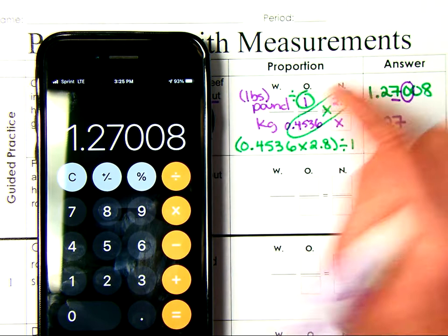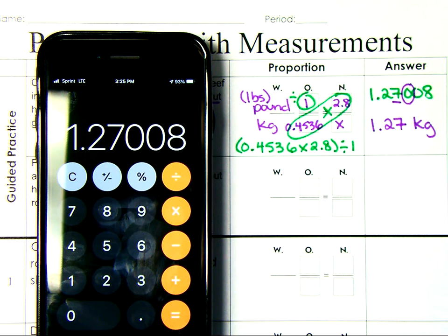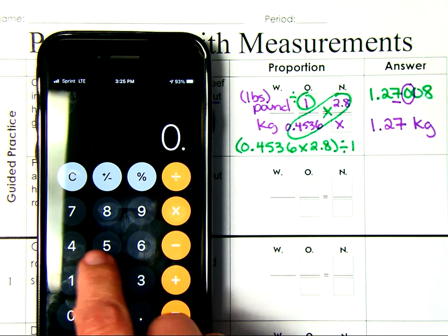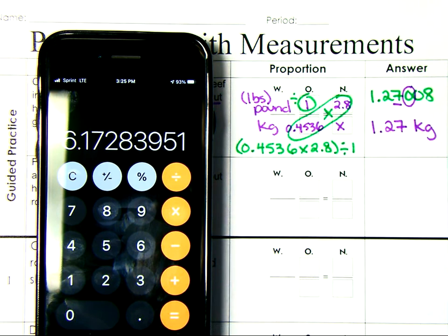If this were multiple choice, there might be a trick answer of 1.27 pounds. So that's why we want to make sure that we have our labels. The other trick answer, if you accidentally put 2.8 right here and did 2.8 times 1 and then divided by 0.4536, I would predict that that would be a trick answer because you did the math right, but you set it up wrong. So that's why we need to make sure we have our labels so they don't fall for those trick answers.